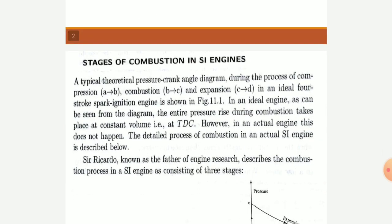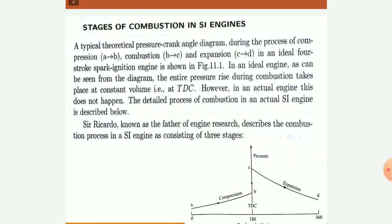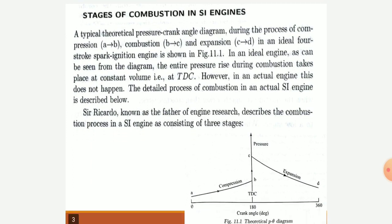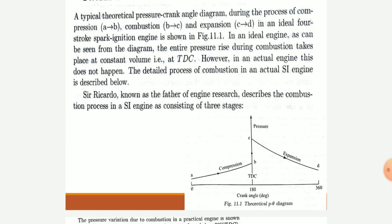As we know, the various stages of combustion in an SI engine follow the strokes of suction, compression, power and exhaust. The typical theoretical pressure crank angle diagram is shown on the screen, where the various lines of the strokes are represented with crank angle on the x-axis. These processes are plotted as A to B, B to C, and C to D in the ideal four stroke ignition engine.